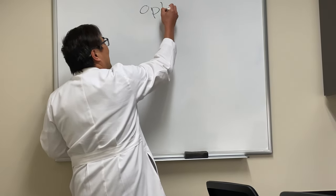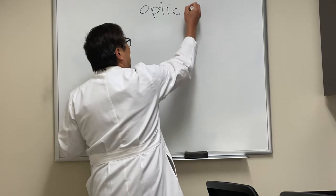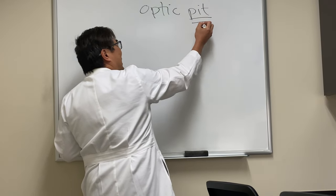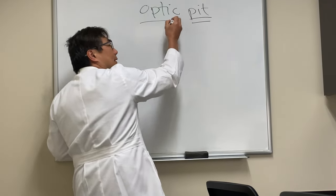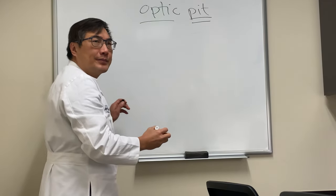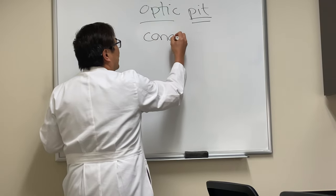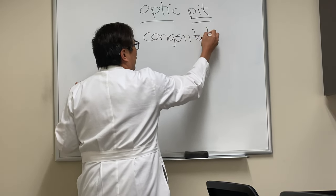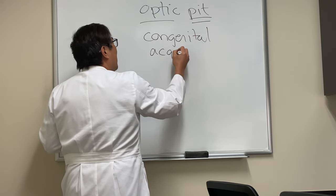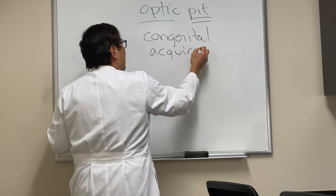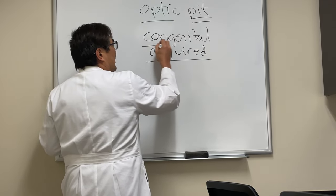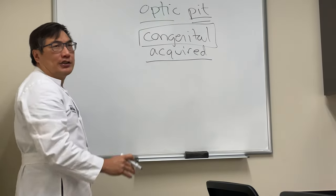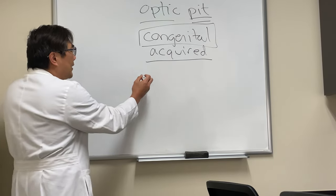So somebody wanted to know about optic pits, and as you might expect, it is a pit in the optic nerve. There are congenital varieties, which is way more common. There are papers that assert acquired versions of this; however, really you should be thinking about congenital lesions in optic pits.